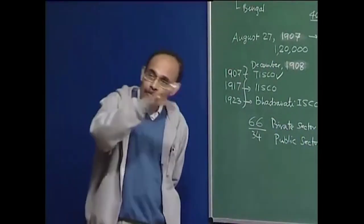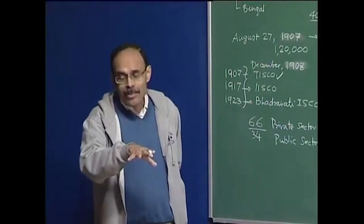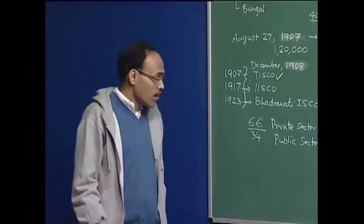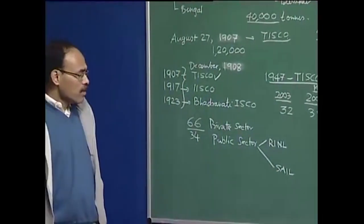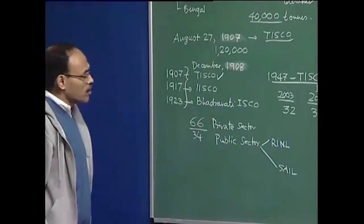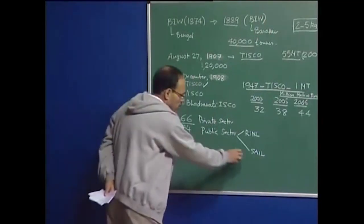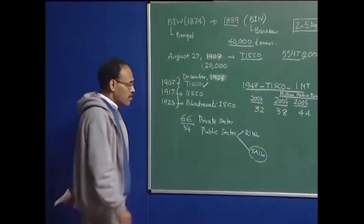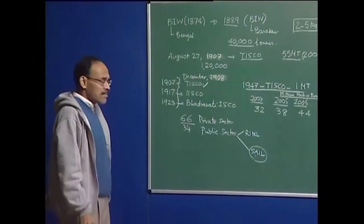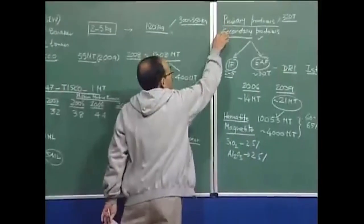SAIL has many plants: Durgapur Steel Plant, Durgapur Alloy Steel Plant, Rourkela Steel Plant, Bhilai Steel Plant, and now the Bhadravati Iron and Steel Company, Bokaro Steel Plant, and others — all managed by the Steel Authority of India Limited, headquartered in Delhi. The private sector steel industry has grown remarkably over the years, comprising both primary and secondary producers.